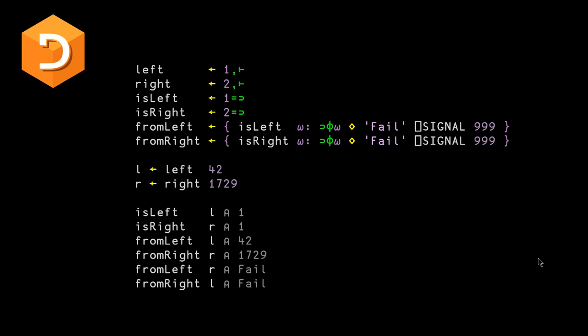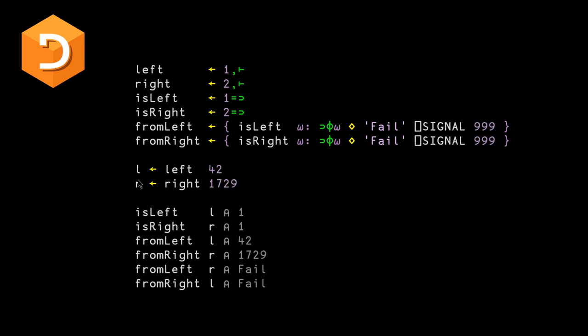Once we have this, we can write some test code. Here we've got an either that has left with a value of 42 and then either with a right with a value of 1729. If we check is left is right, we get true true. If we get from left and from right with the corresponding left and right, we get 42 and 1729. If we swap them so that we're trying to call from left on a right, we just get two fail messages.